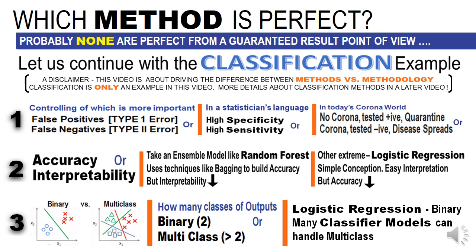Take a completely different dimension: what is the output class? Is it binary or is it multi-class? Many outputs could be simple dichotomous — true versus false, yes versus no. Many outputs can be multi-class. A logistic regression can take binary, whereas there are so many classifier models which can handle multi-class outputs. So, sum and substance: there is nothing called the so-called perfect method. There is no one shoe that fits all.